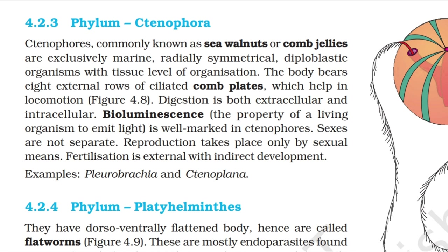Topic 4.2.3: Phylum Ctenophora. Ctenophores, commonly known as sea walnuts or comb jellies, are exclusively marine, radially symmetrical, diploblastic organisms with tissue level of organization. The body bears eight external rows of ciliated comb plates which help in locomotion. Digestion is both extracellular and intracellular. Bioluminescence — the property of a living organism to emit light — is well-marked in ctenophores. Sexes are not separate. Reproduction takes place only by sexual means. Fertilization is external with indirect development. Examples: Pleurobrachia and Ctenoplana.